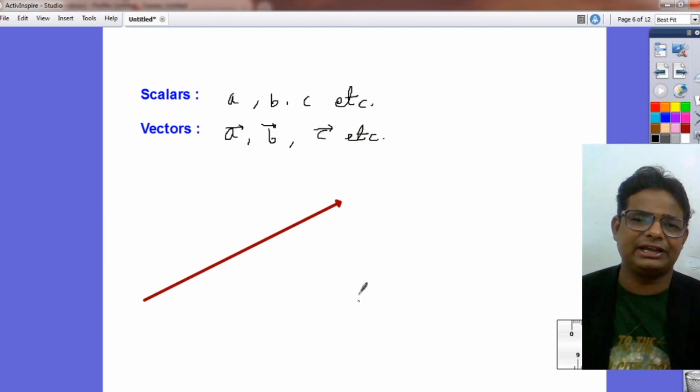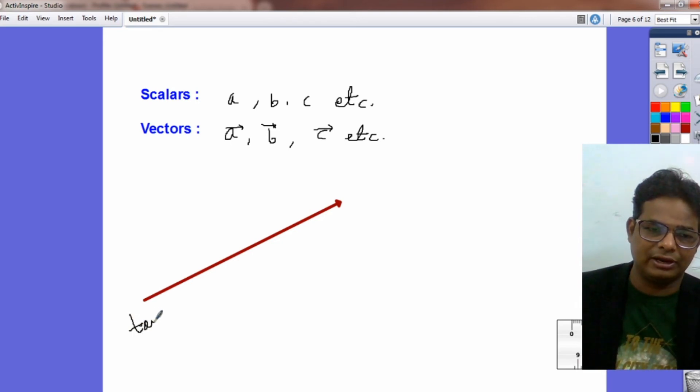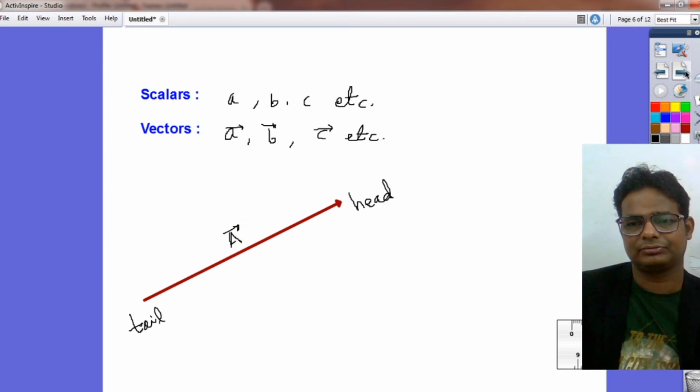If a vector has two ends, the starting point is known as tail and which side will be arrow, we call head. And suppose that this vector is named A.